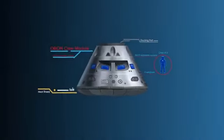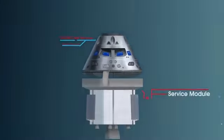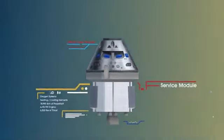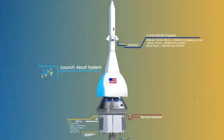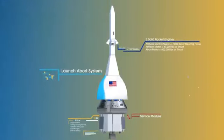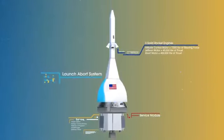The crew module, where up to four astronauts will live and work throughout the flight. The service module, with life-support systems for the crew and its own engine and fuel reserves, and a launch abort system, with engines capable of pulling the crew module to safety during launch should anything go wrong.